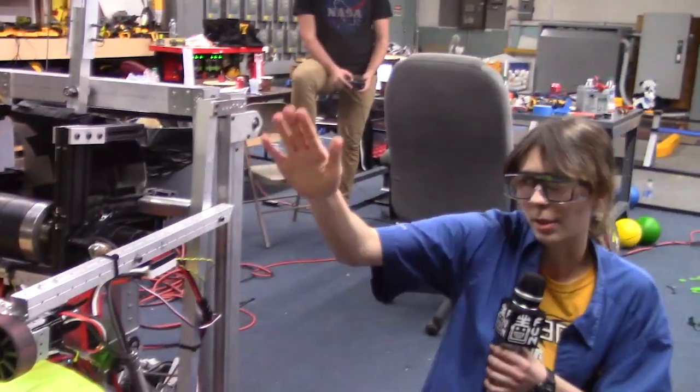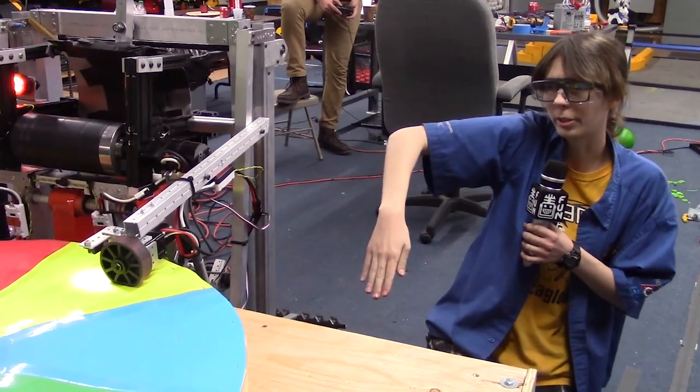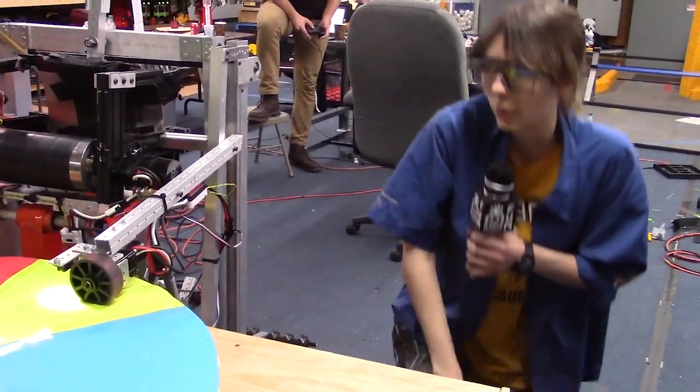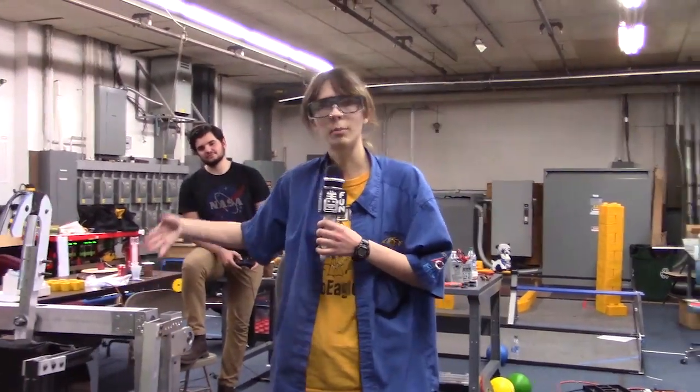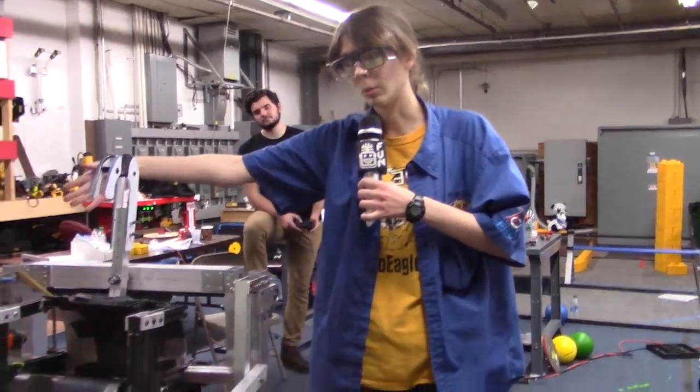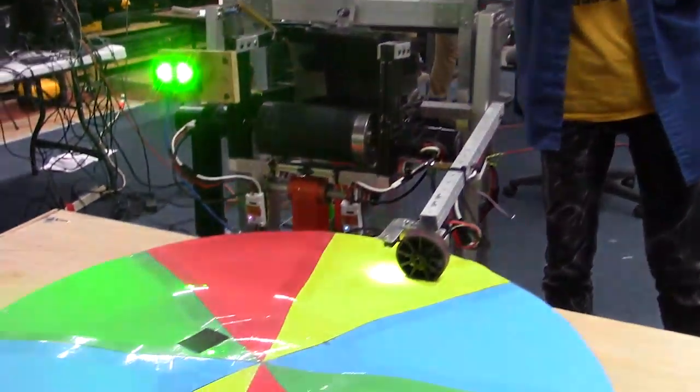This will act as a pivot. It'll bring it down into our frame perimeter and then bring it up. Our strategy for doing the color wheel is to come along the wall with our bumpers rubbing its edge to line up to the color wheel.